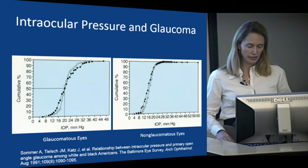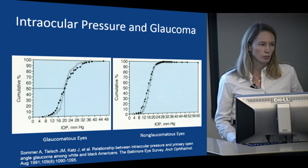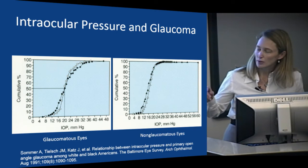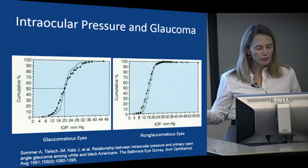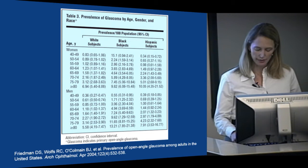We learned this in the early 90s from population-based studies. The Baltimore Eye Survey included more than 5,000 participants who all had eye exams done in neighborhood-based clinics. When we plotted the cumulative distribution of intraocular pressure in glaucoma versus non-glaucoma patients, the pressures in glaucoma were skewed higher, but still 50% of glaucomatous eyes had a pressure reading of 20 or below at the baseline exam. So pressure is important but is not a great screening tool for glaucoma.